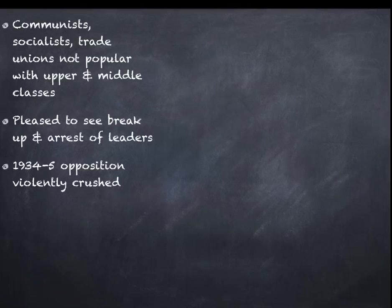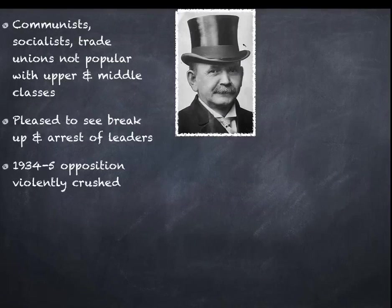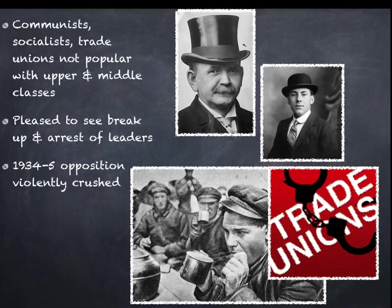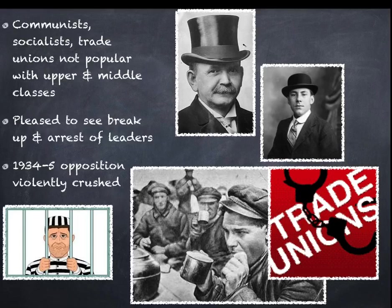In terms of people like the communists, the socialists, the trade unions, these were not popular with the upper or middle classes. They were actually quite pleased to see the arrest of communist leaders and the breakup of trade unions. Back in the Weimar period, big industries had struggled to make profits because trade unions had encouraged strike action. After Hitler becomes chancellor and consolidates his power by 1934 in the Enabling Act, opposition was violently crushed. Many communists and trade unionists were imprisoned.